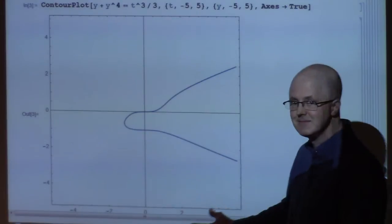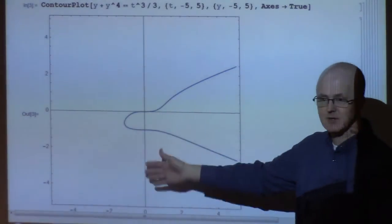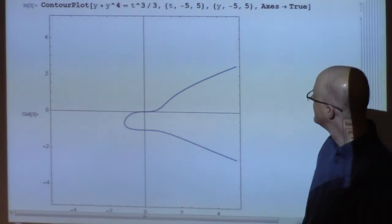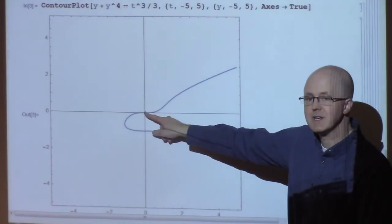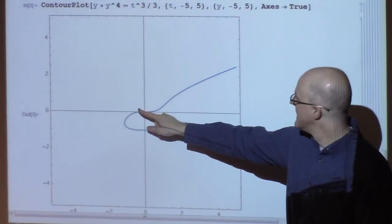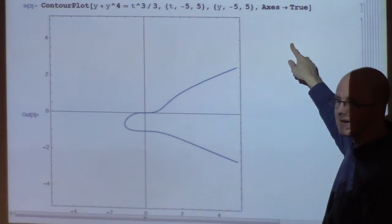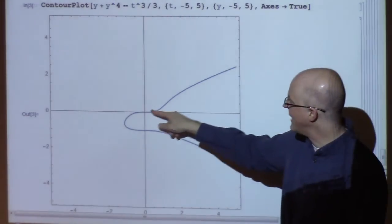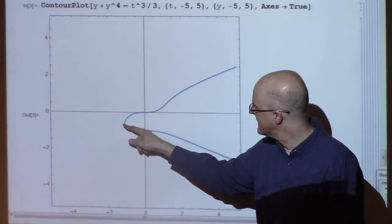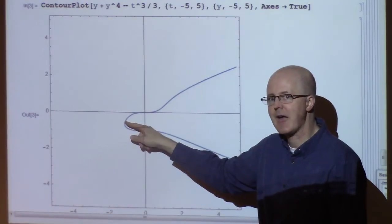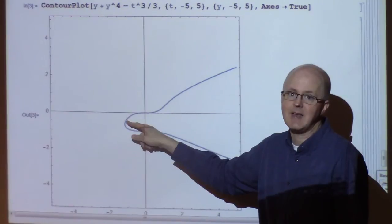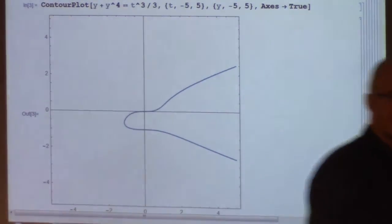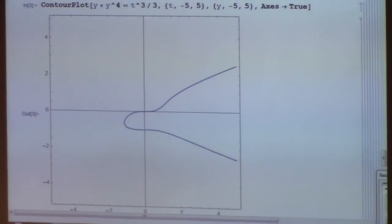It's not the graph of a function—it fails the vertical line test. There are vertical lines that go through more than once. However, there's a piece of it that includes the initial condition at (0, 0). This piece goes on forever up here but stops right about there. You want to look for the location where the tangent line is vertical. You can find that through implicit differentiation; you might be able to find that location.